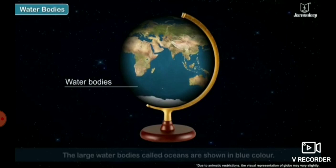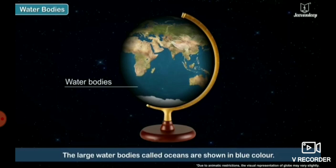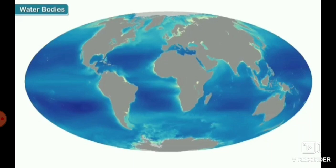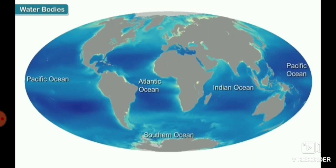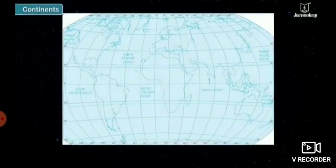The large water bodies called oceans are shown in blue color. There are five oceans on the earth: the Atlantic Ocean, the Pacific Ocean, the Indian Ocean, the Southern Ocean, and the Arctic Ocean.